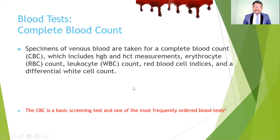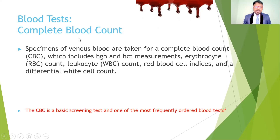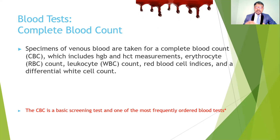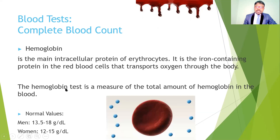The first test is the Complete Blood Count (CBC), also called Complete Blood Picture (CBP). Venous blood specimens are taken for CBC, which includes hemoglobin (Hgb), hematocrit measurements, erythrocyte (RBC) count, leukocyte count, red blood cell indices, and differential white cell count. These tests provide proper information about the patient's condition.